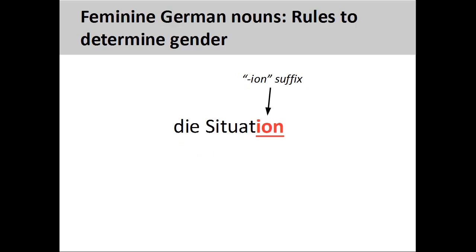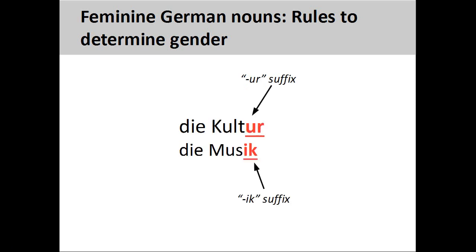Nouns ending in –ion, such as 'Situation,' meaning situation, are always feminine. Nouns ending in –ur and –ik, such as 'Kultur,' meaning culture, and 'Musik,' meaning music, are always feminine. There are several other endings that indicate a feminine noun, but I won't cover these in this presentation, as they do not occur frequently.